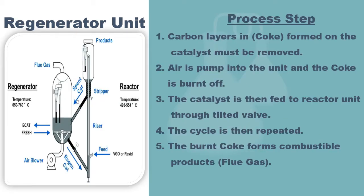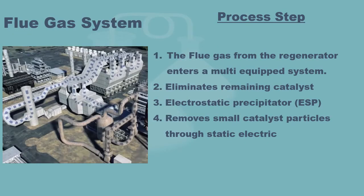Carbon layers in the form of coke are formed on the catalyst and require removal. In this process, air is pumped into the regenerator to burn off the coke. The catalyst is then fed back to the reactor through a valve and the cycle is repeated. The burnt coke forms combustible products known as flue gas. The flue gas from the regenerator enters a multi-stage system known as the flue gas system, which helps eliminate remaining catalyst particles. This system is also equipped with another unit called an electrostatic precipitator, or ESP.